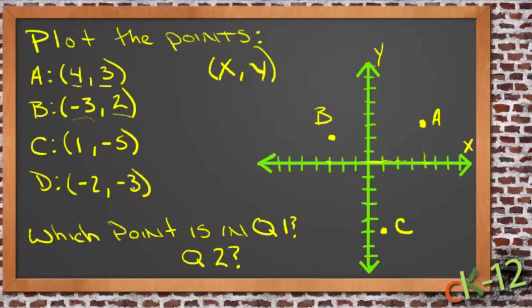And finally we have point D, which is at negative 2, so 2 to the left on the x-axis. And negative 3, so 3 down on the y-axis. There's point D.